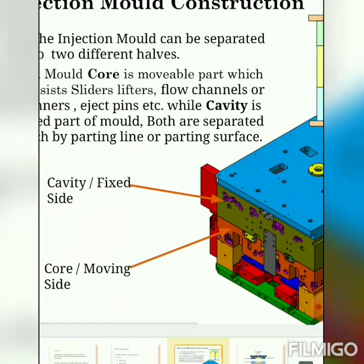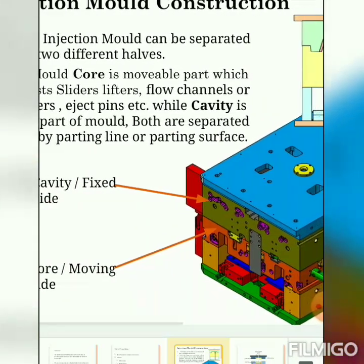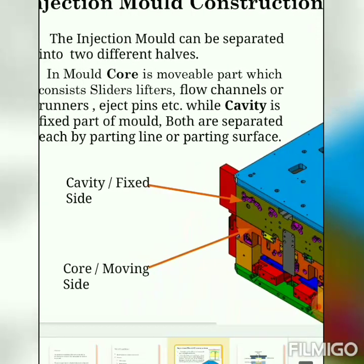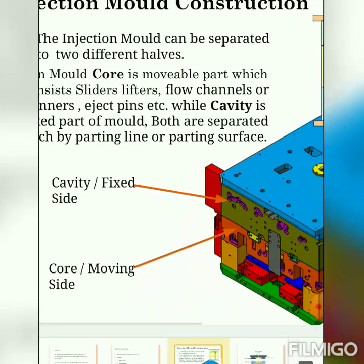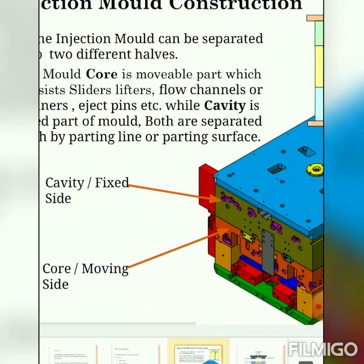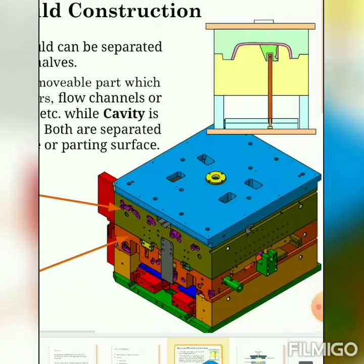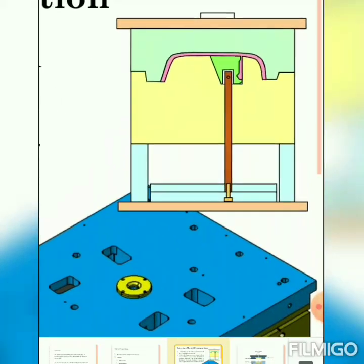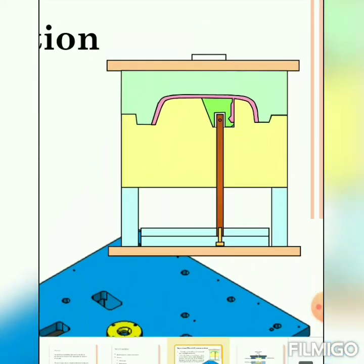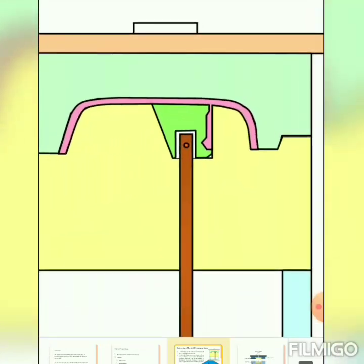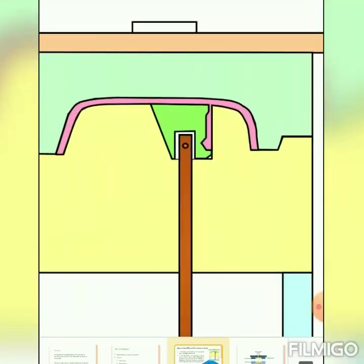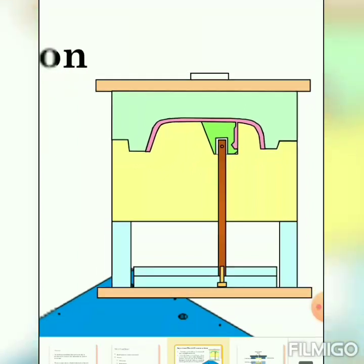You can see in the image which one is the cavity and which is the core. The moving side is at the bottom and the fixed side is at the top. This is an example for one simple product that also includes a snap feature on the component.